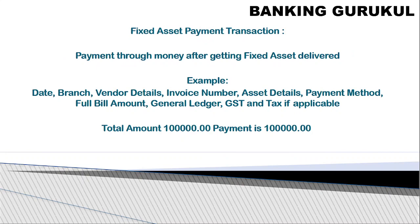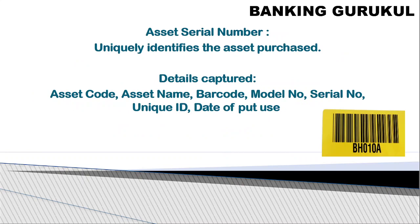Payment transaction means paying the full amount after the fixed asset is received. If a partial advance was already paid, the remaining amount is paid now; if nothing was paid earlier, the full amount is paid. For a total of 1 lakh being paid in full, details captured include: payment date, branch, vendor details, invoice number, asset details, payment method such as RTGS or NEFT, which general ledger account is debited, the GST payable account credited, and the full bill amount. These details can be maintained manually or in the system.